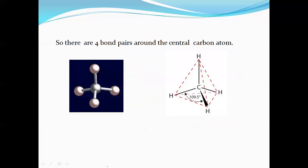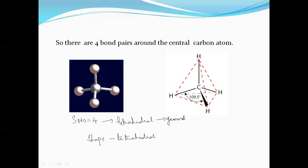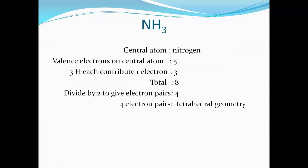In methane, carbon is attached to 4 other hydrogen atoms, which means there are no lone pairs — only bond pairs. So the geometry is tetrahedral. Since the steric number is 4, the geometry is tetrahedral, and the shape is also tetrahedral. Remember: the shape and the geometry are both the same if there are no lone pairs. In the tetrahedral arrangement, the central atom is attached to 4 hydrogen atoms and the bond angle is 109.5°.